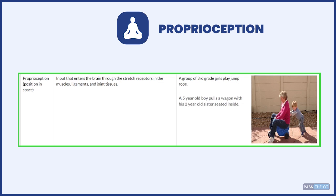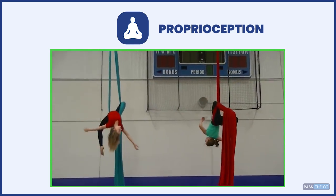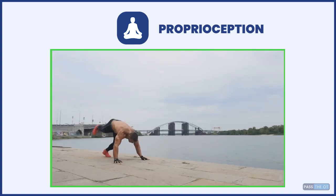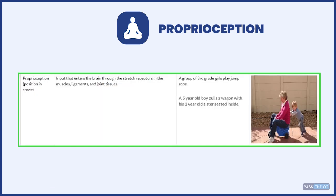The next is proprioception, which is your position in space. Proprio — position. The brain stretches receptors in your muscles, ligaments, and joints. Examples include a yoga pose like crow pose or a handstand, or a child pushing their grandmother down the street on a scooter. Anytime you're pushing, pulling, stretching, or lengthening, that's proprioception.